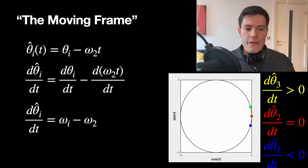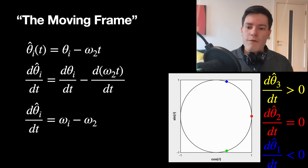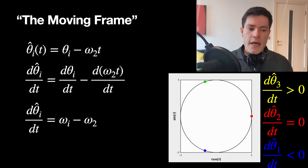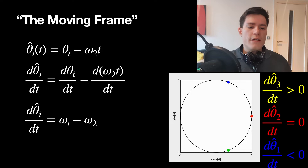Those equations are done with a change of variables. We define theta-hat sub i as equal to theta i minus the intrinsic frequency times time of the intermediate oscillator. Taking the derivative, the rate of change of theta-hat i equals omega i minus omega 2. So theta-hat 2 is never changing, theta-hat 3 is always moving forward, and theta-hat 1 looks like it's moving backwards.